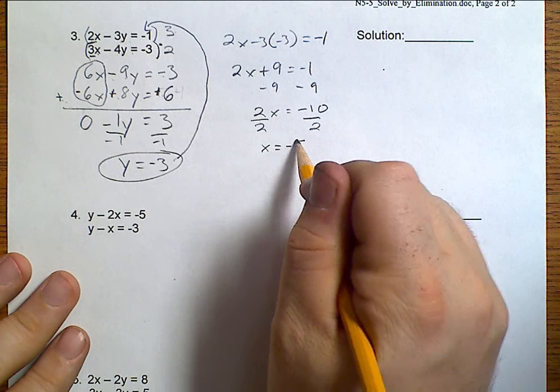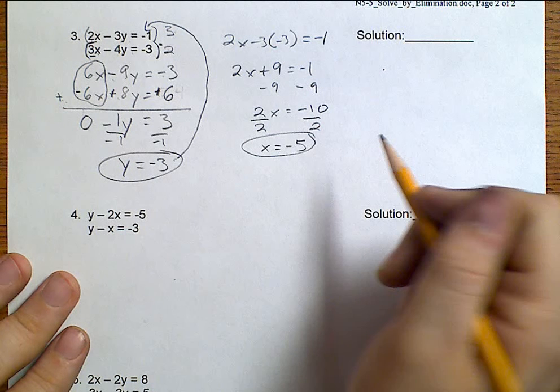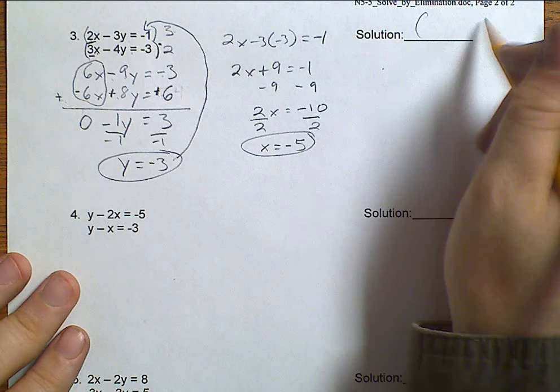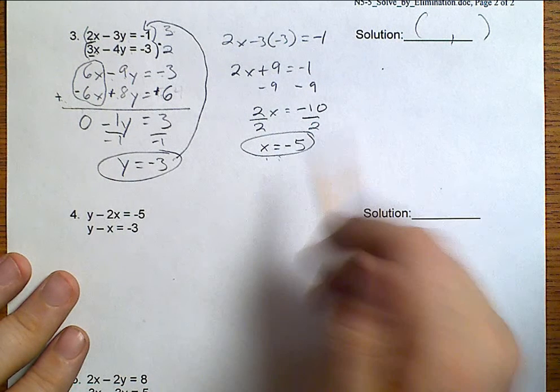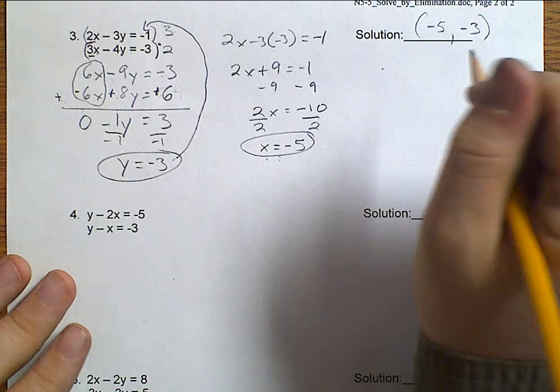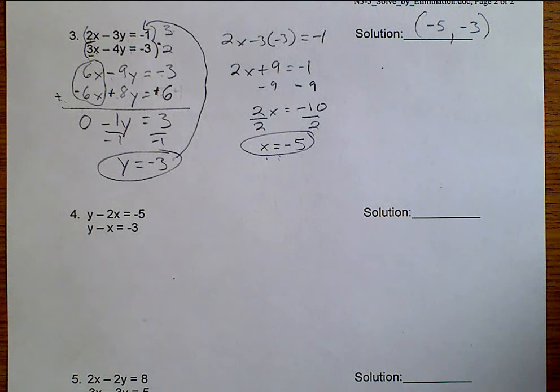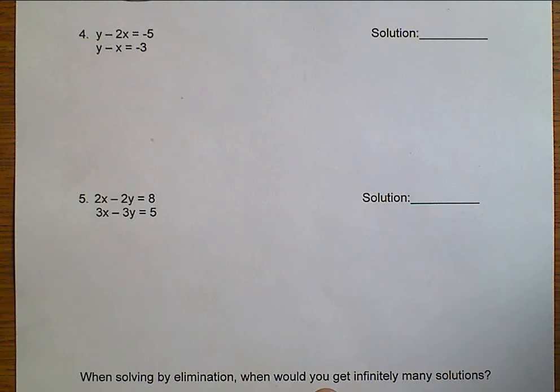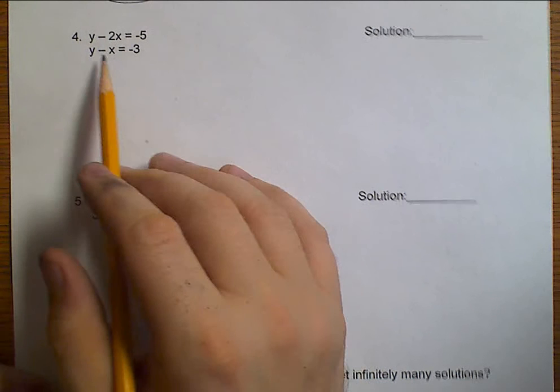Plug that back into one of my equations. So, we have 2X minus 3 times negative 3 equals negative 1. So, 2X plus 9 equals negative 1. We subtract 9 from both sides. We get that 2X equals negative 10. And when we divide both sides by 2, we get that X equals negative 5. Make sure that when you're putting your solution, that the X number always goes first. And Y always goes second.